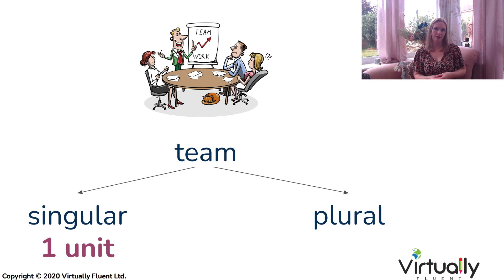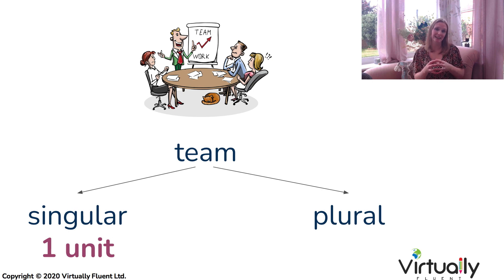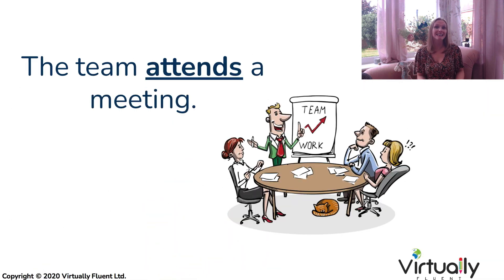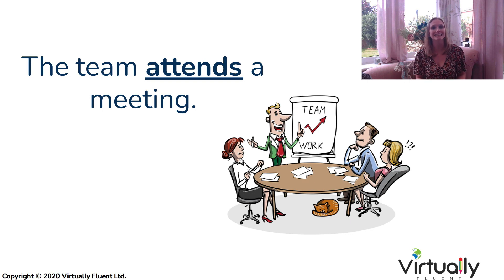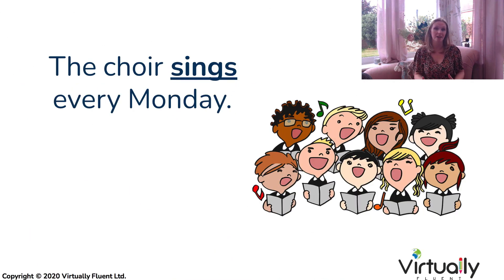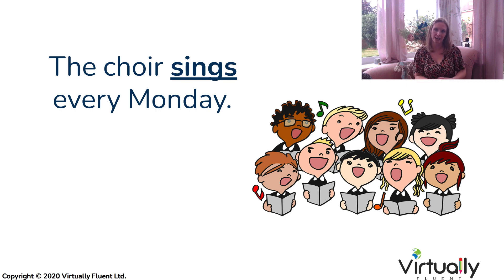When that collective noun is used to talk about one entity, one group, and every person or thing inside that collective noun is doing the same activity — one unit — then we would use it in its singular form. For example, 'the team attends a meeting every Monday.' Every person in that team attends the meeting; they are all doing the same action, so we use the singular form of the verb. Here's another example: 'The choir sings every Monday.' You would assume every person within that choir is singing at the same time.